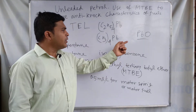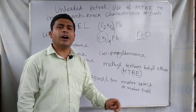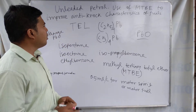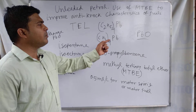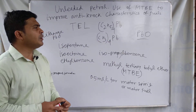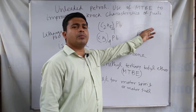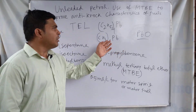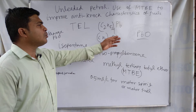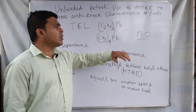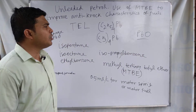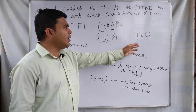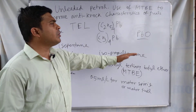These are the limitations of using lead compounds as anti-knocking agents in gasoline. Using tetraethyl lead causes difficulties because lead oxide is formed after burning in the internal combustion engine, and this lead oxide deposits in the cylinder and jams the piston.